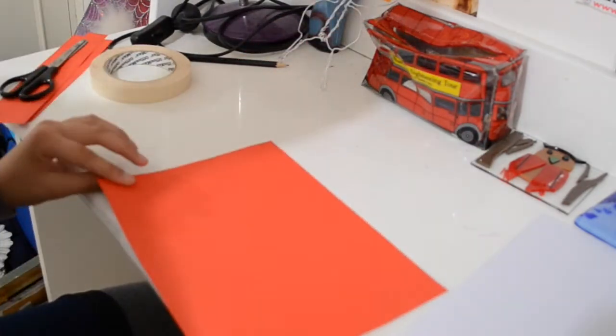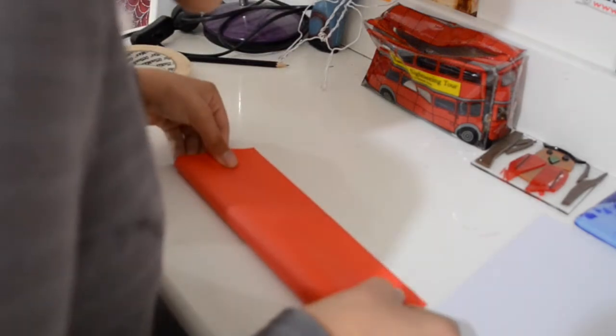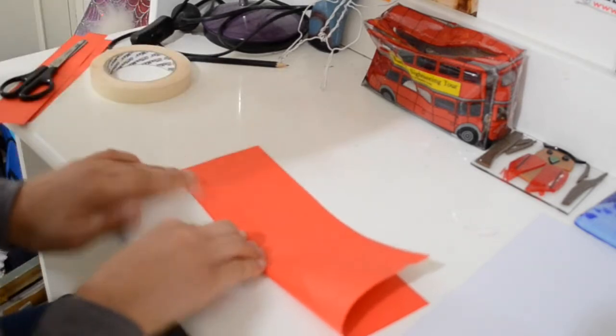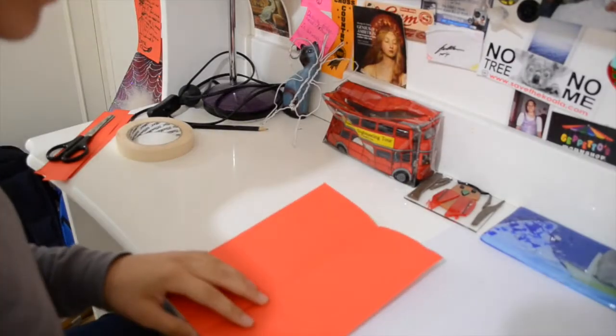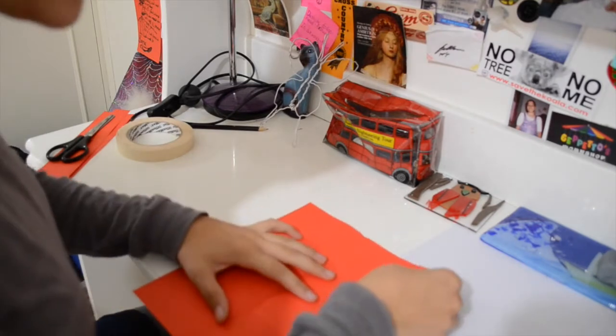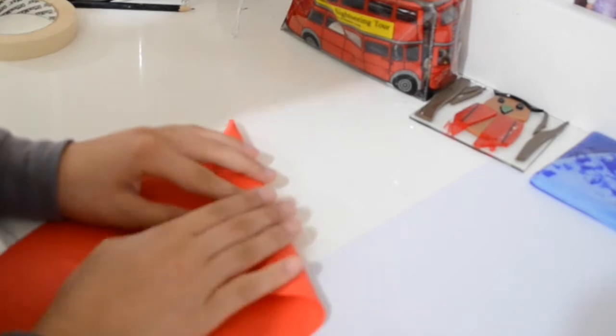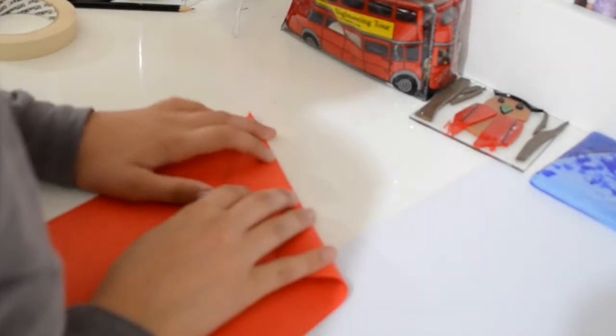Now once you've cut out your red piece of paper, you're going to fold it into a corner. Just like that. Once you've folded the red piece of paper in half, then we're going to take the corner and fold it in half like that.